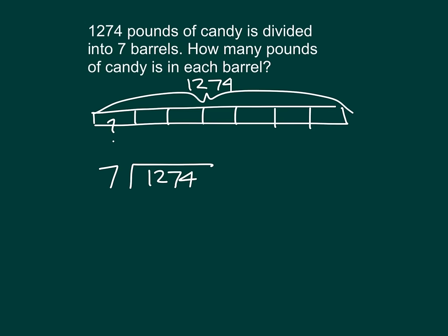Those thousands can't be divided by 7. Twelve hundreds can be divided by 7. It goes in once. 1 times 7 is 7, and 12 minus 7 is 5. We bring down the 7, and then we go to our division step again. 57 tens divided by 7, which is 8.